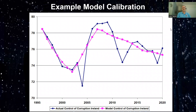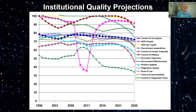Here's an example calibration of control of corruption for Ireland between 1996 and 2020. The model in pink tracks the actual values in blue fairly well. We performed this calibration for all 13 institutions. The projections show data from 1996 to 2021, with projections extending into the future until 2026.